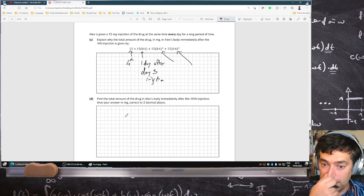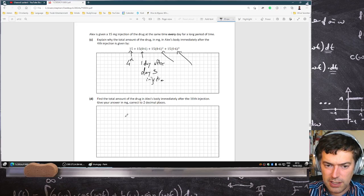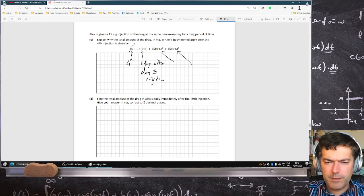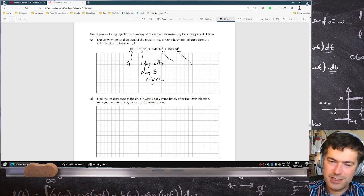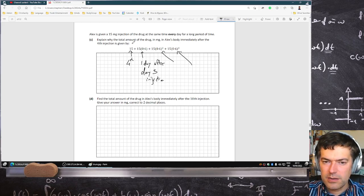Find the total amount of drug in Alex's body immediately after the tenth injection. Give your answer to two decimal places. So it's a geometric progression. This would be immediately after the fourth injection. So 1, 2, 3, 4.